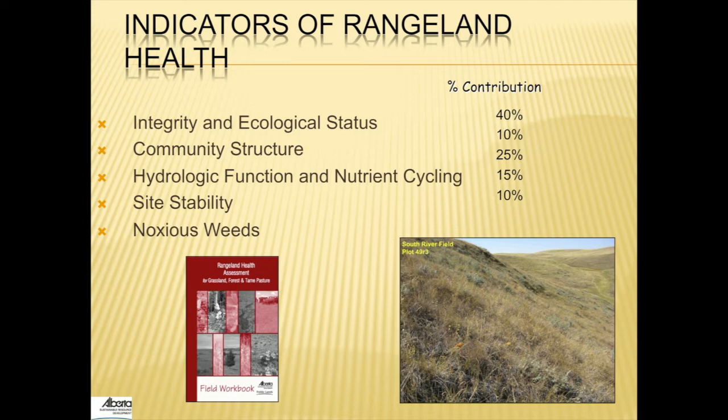This protocol applies five indicators to gain a measure of the health and function of rangeland plant communities. Along with the indicators, we also need an ecological reference or a standard in the form of a plant community classification system.